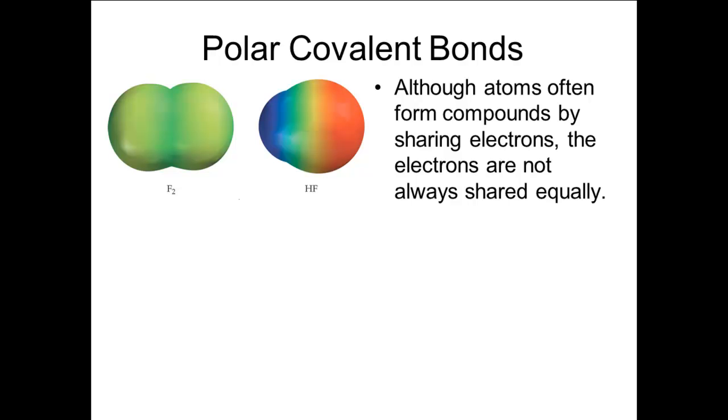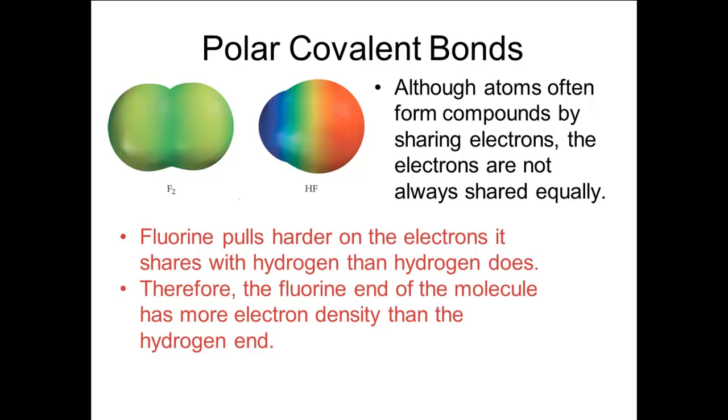When atoms are identical, both atoms have an equal pull on the two electrons in the bond. In that case, the electrons are shared exactly equally, as they are in fluorine shown on the left in the diagram. But if the two atoms are not identical, then it is likely that they will not pull equally on the two electrons, as in HF. The fluorine atom pulls on the electrons more strongly than the hydrogen atom does, so the fluorine end of the molecule will have a higher electron density than the hydrogen end. The fluorine end will be slightly negative and the hydrogen end will be slightly positive.